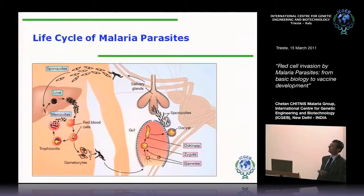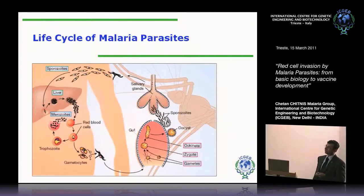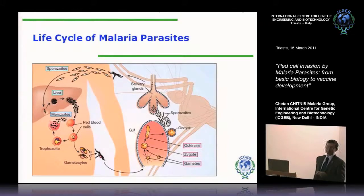The infection in humans is initiated when a mosquito takes a blood meal and injects sporozoites, which first go to the liver, multiplying in the liver, differentiate into merozoites which are released into the bloodstream, which go on to invade red blood cells. And as they multiply, all the clinical symptoms of malaria are attributed to the blood stage of the parasite life cycle. There are no symptoms when the parasite is in the liver.